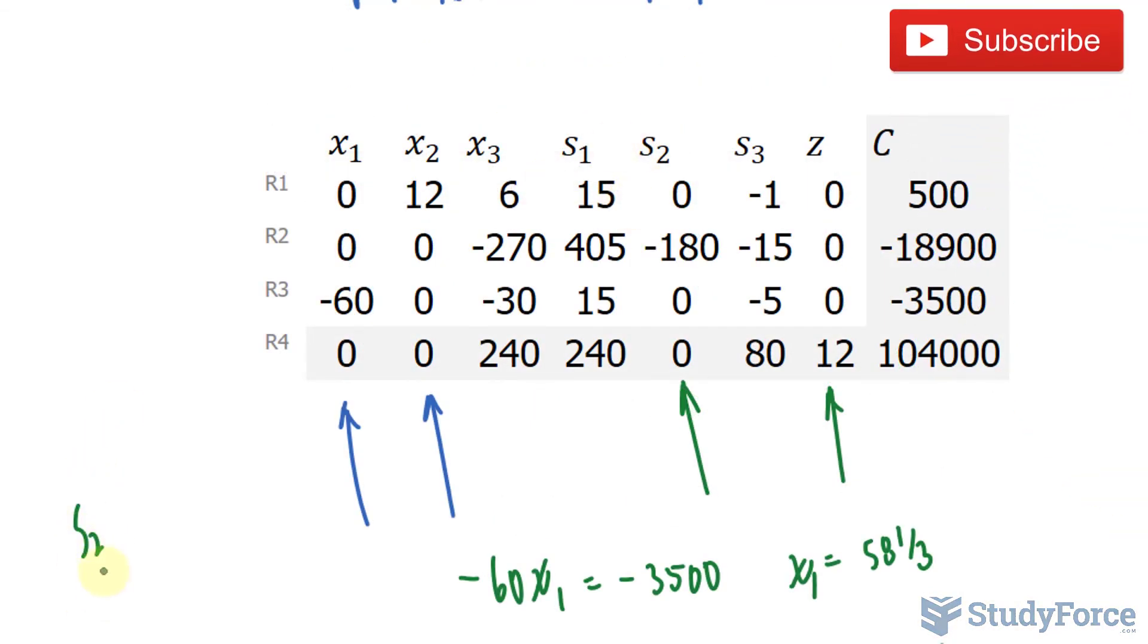You'll do the same thing for s sub 2. s sub 2 times negative 180 is equal to negative 18,900. Solving for s sub 2 gives us 105.